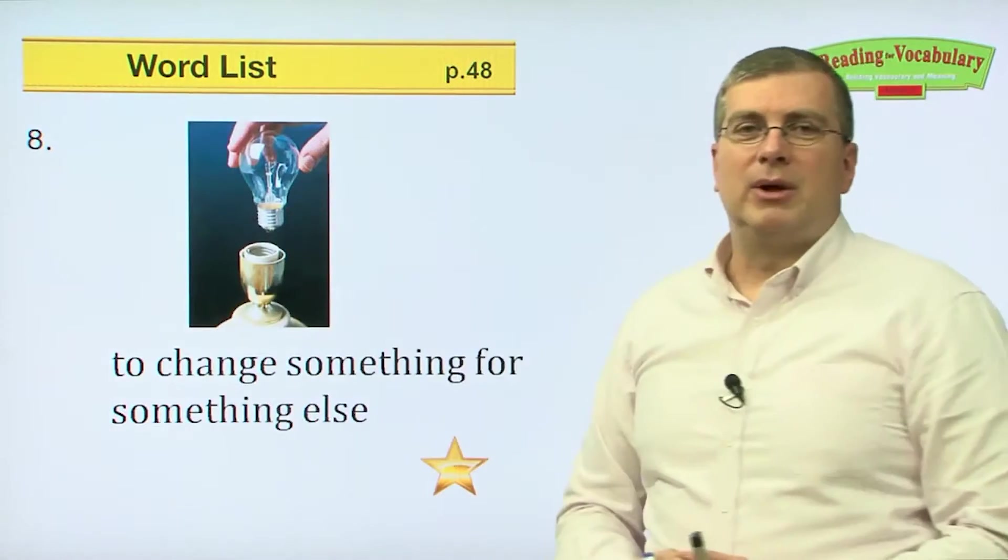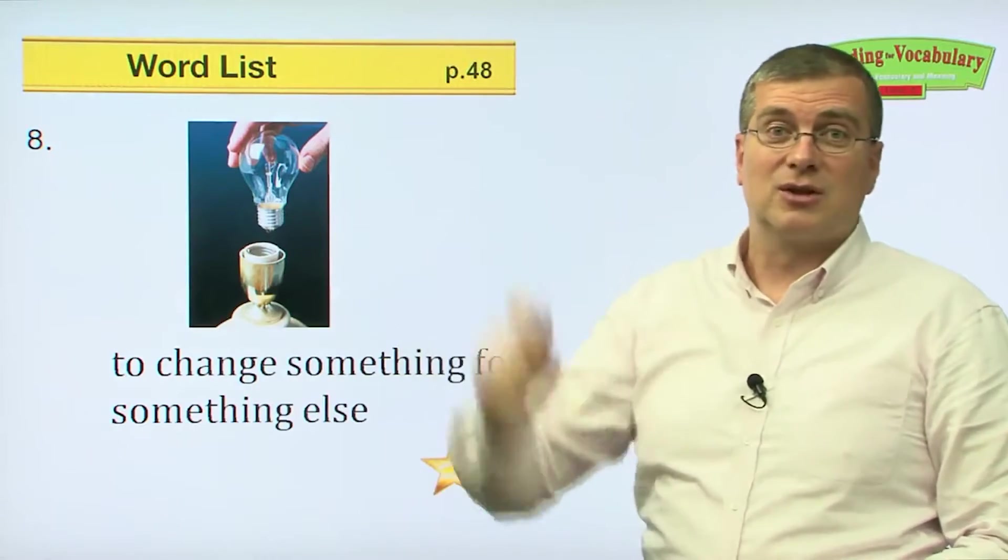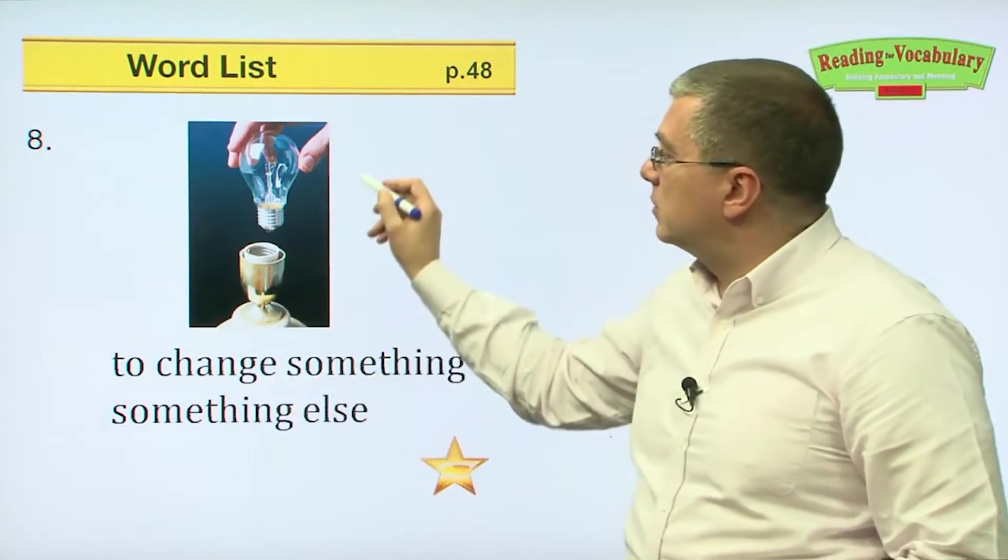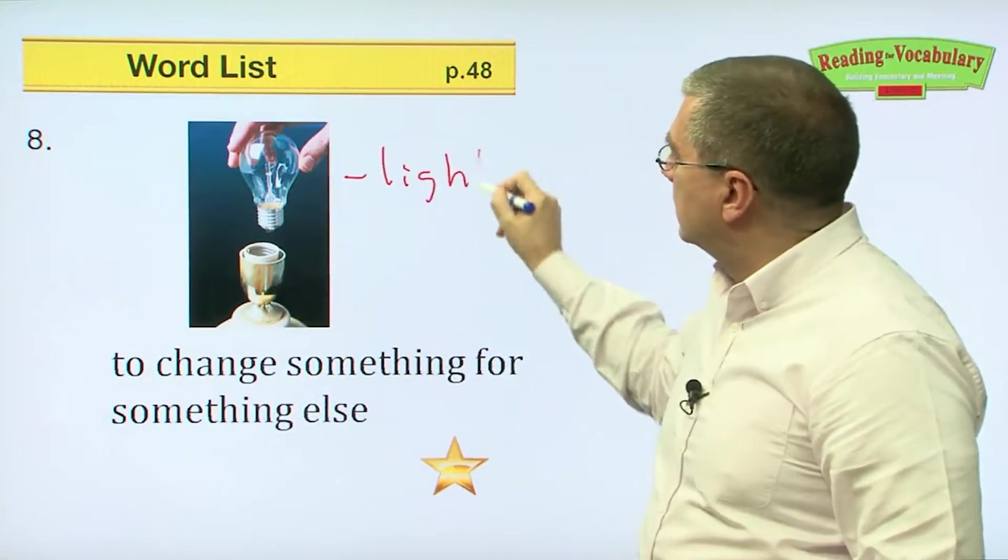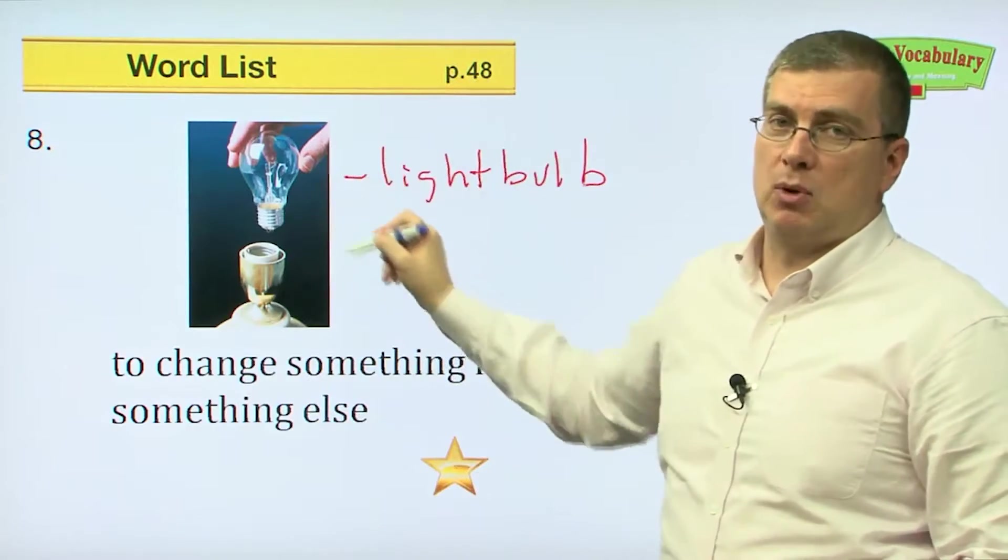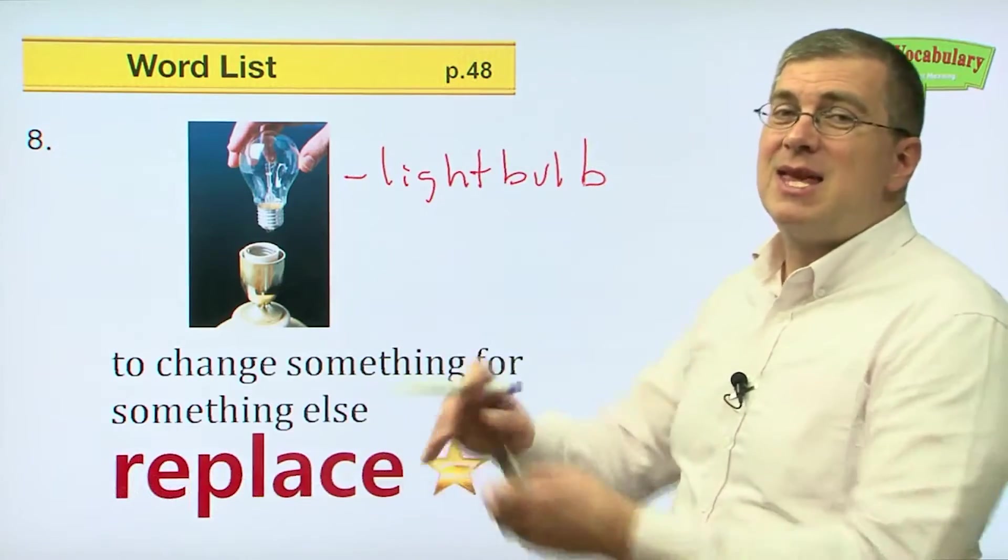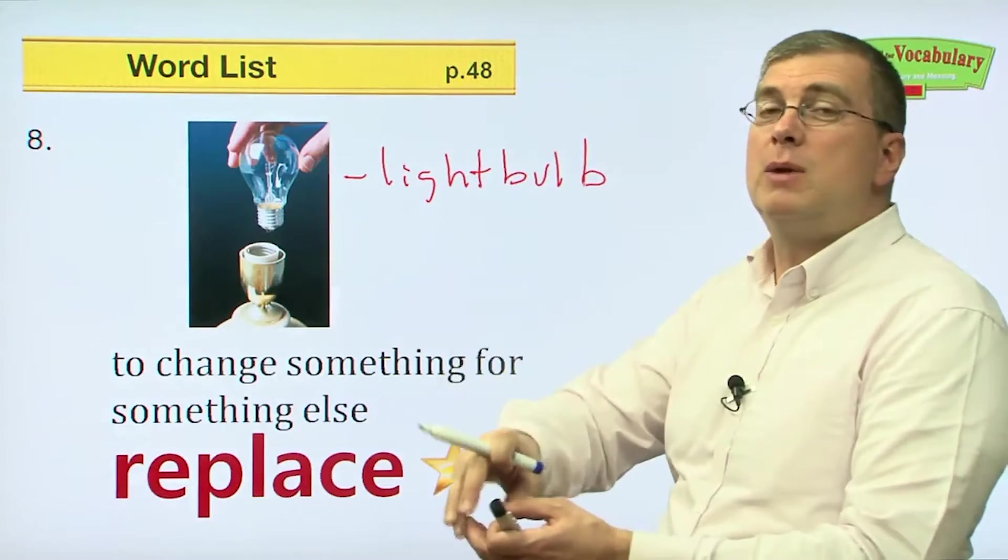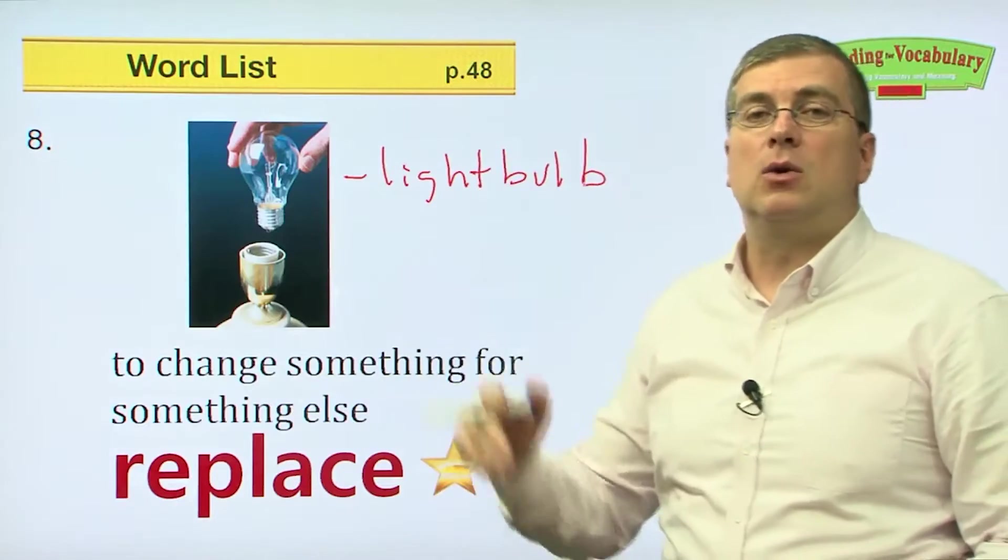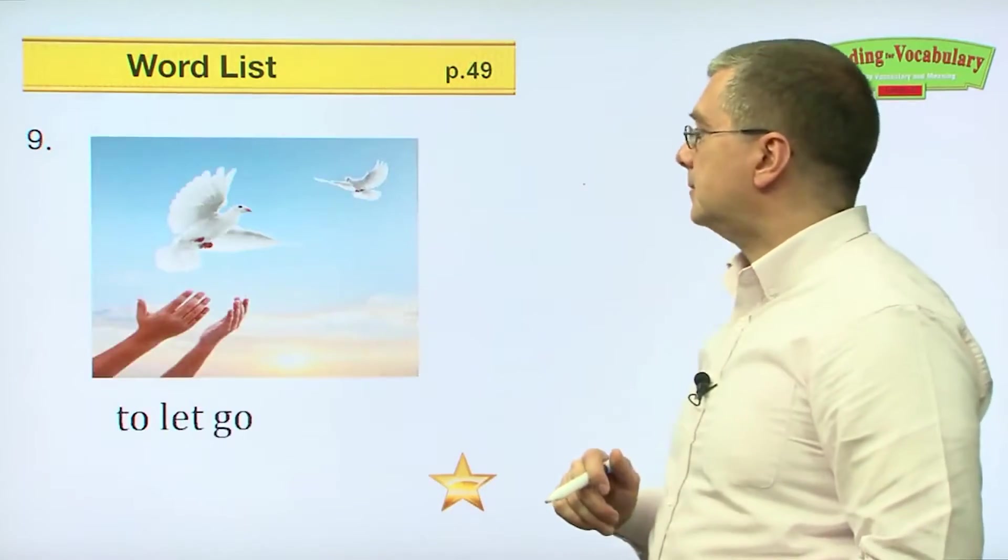Number eight. Maybe your mom or dad does this a lot. If the light goes out in your room, you flip the switch. It doesn't work. It's time to change something for something else. So you take the old light bulb, that's a light bulb by the way, and you put a new light bulb in its place. What are you doing? You are replacing. Replace the old one with a new one. You replace the old one, get rid of the old one, put a new one. Replace the old light bulb with a new light bulb.